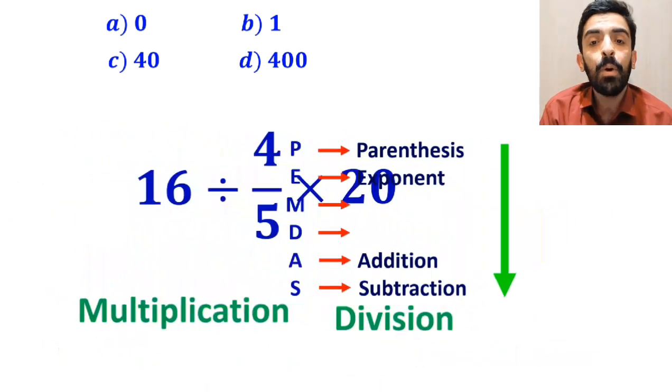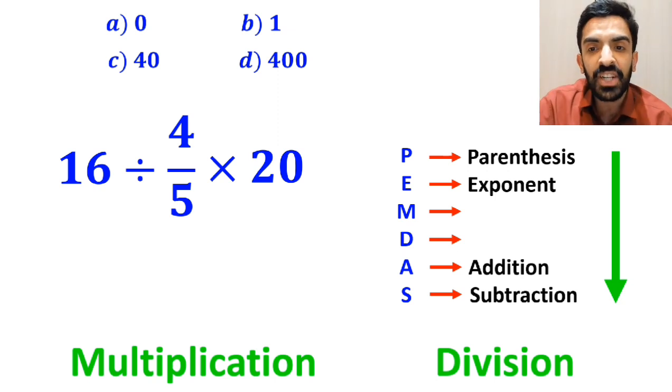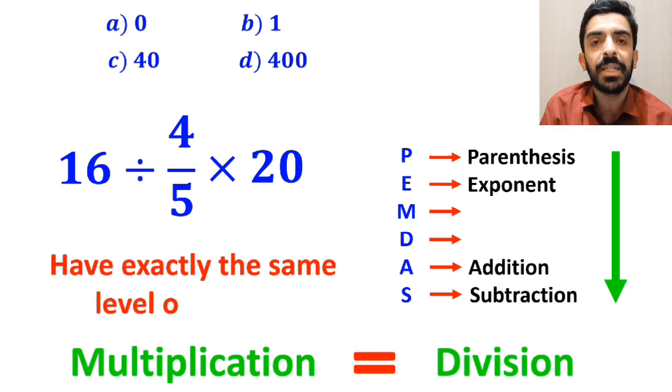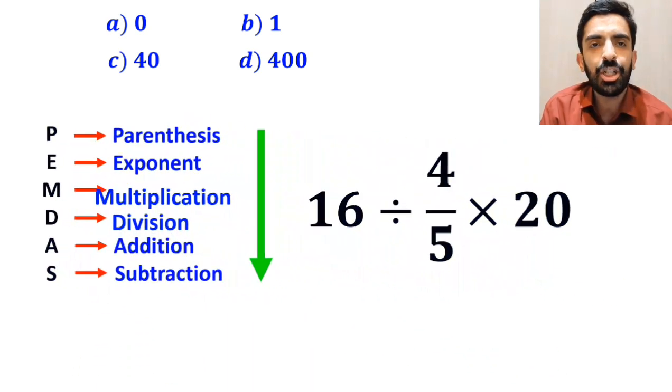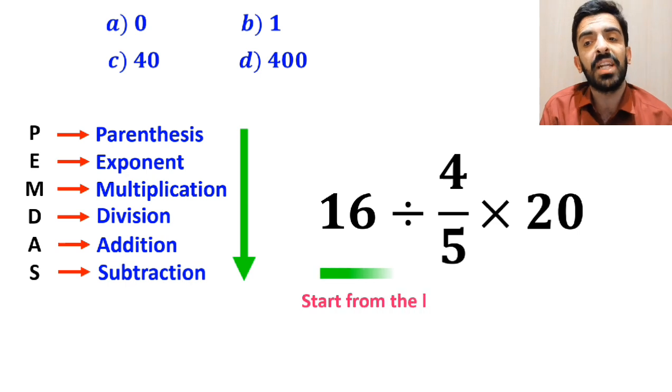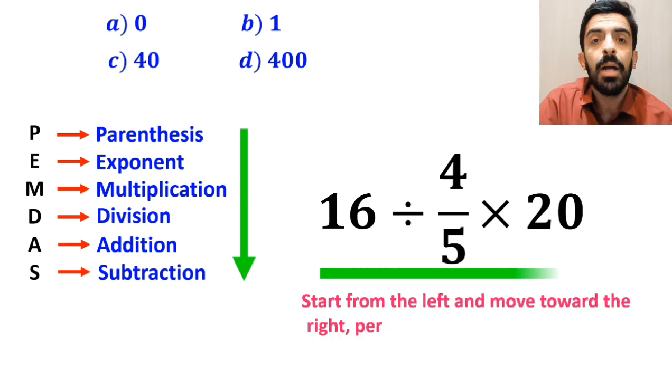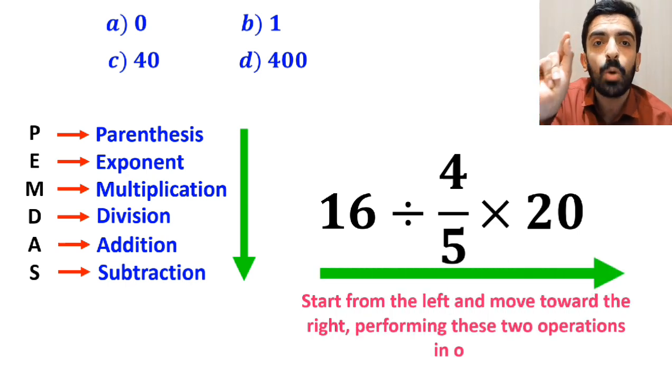However, it's very important to note that multiplication and division have exactly the same level of priority in the PEMDAS rule. In this situation, the best approach is to start from the left and move toward the right, performing these two operations in order.